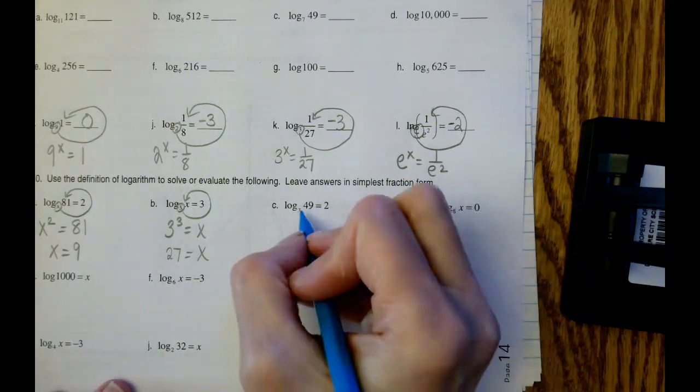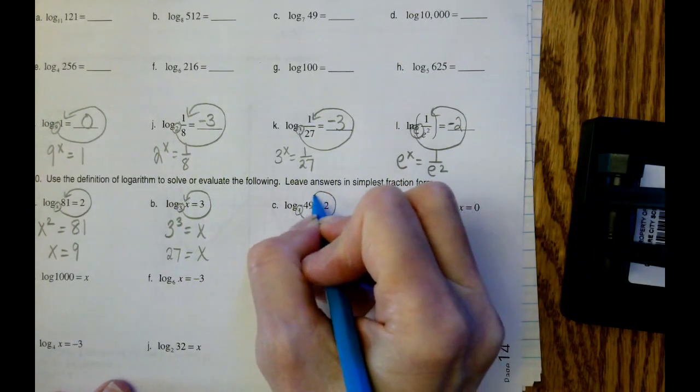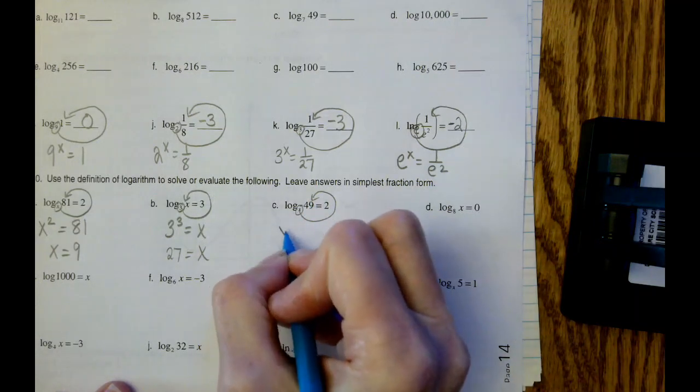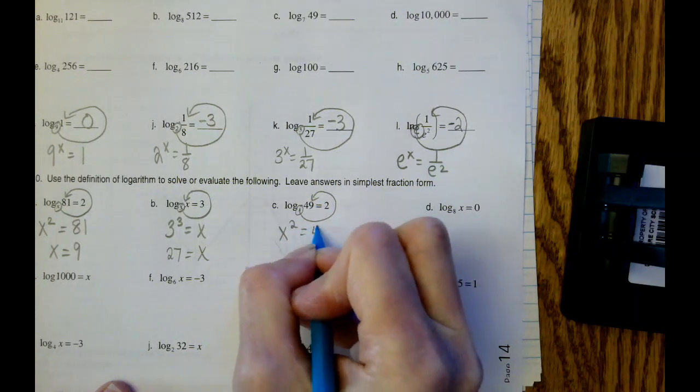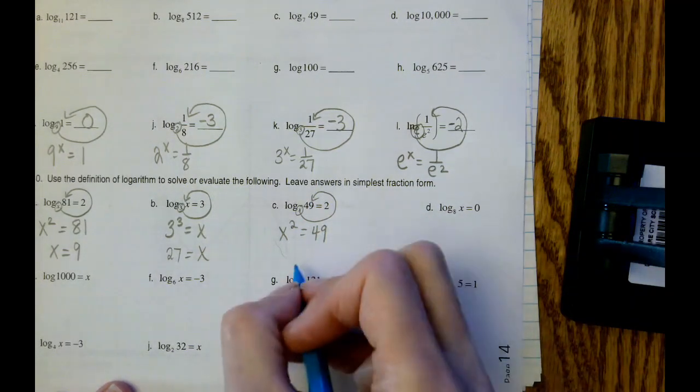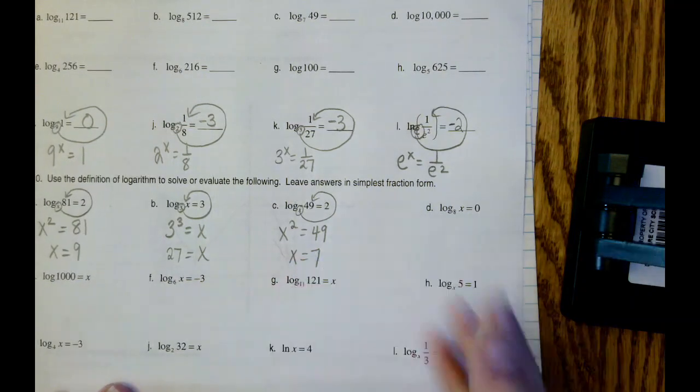Letter C. Curly q. x to what power equals 49? Well, 7 times 7 is 49. So x equals 7.